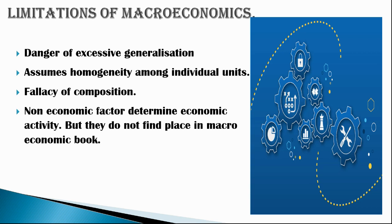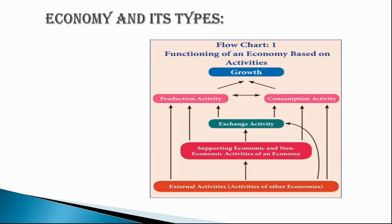The second limitation is that macroeconomics assumes homogeneity among individual units — homogeneous expectations assume all investors expect the same and make identical choices in a given situation. Third is the fallacy of composition: what is good for an individual need not be good for the nation, and vice versa. Fourth, non-economic factors determine economic activities but do not find a place in macroeconomics.